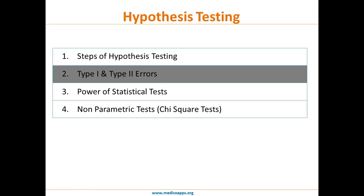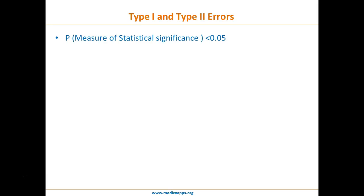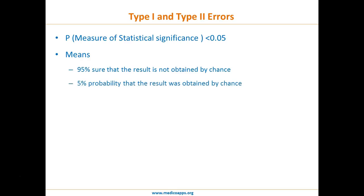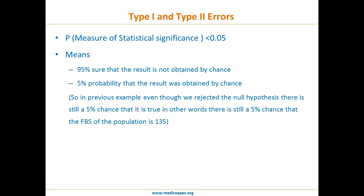Till now we have seen hypothesis testing in terms of the steps required. Now we will see the various errors and power of a statistical test. When we say that P, the measure of statistical significance, is less than 0.05, it means we are 95% sure the result is not obtained by chance. But still there is a 5% probability that the result of hypothesis testing was obtained by chance — so even though we rejected the null hypothesis, there is still a 5% chance that the fasting blood sugar of the population is 135.